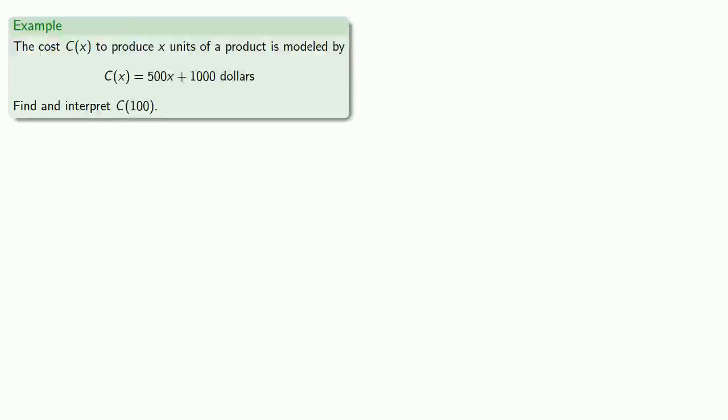So let's play around with these linear functions. Suppose the cost c(x) to produce x units of a product is modeled by c(x) equals 500x plus $1,000. Let's find and interpret c(100).